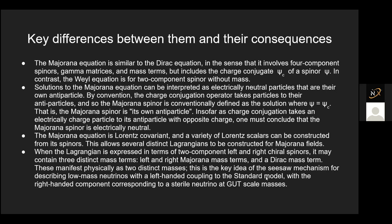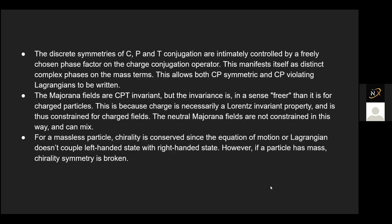I'm going to go in depth about seesaw mechanism, doing only type one — describing low-mass neutrinos with a left-handed coupling to the standard model. Coupling means any sort of interaction, and the standard model has the fundamental forces. Left-handed coupling means only left-handed Majorana neutrinos interact within the standard model, and only left-handed neutrinos react to the weak force. The right-handed component corresponds to sterile neutrinos at GUT scale — grand unified theory — with very high temperature like Planck energy.